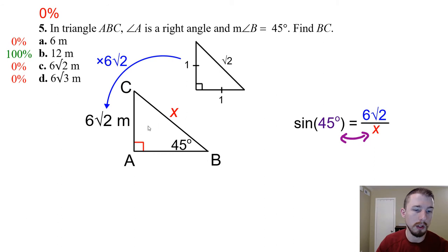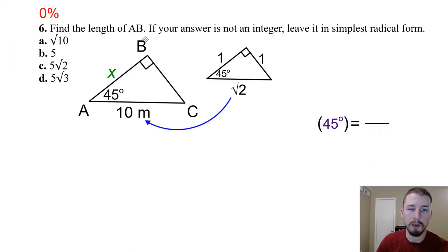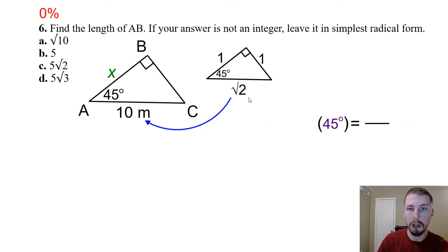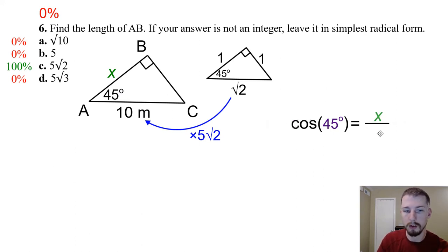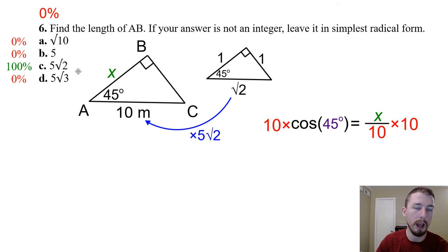Number six — find length AB; leave in simplest radical form. It's a 45-45-90 triangle similar to 1-1-√2, with hypotenuse = 10. Going from √2 to 10: multiply by √2 to get 2, then multiply by 5, so the scale factor is 5√2. The leg (1 in the unit triangle) becomes 1 × 5√2 = 5√2. Answer: C. Using trig: cos 45° = x/10, so x = 10 cos 45° = 5√2.